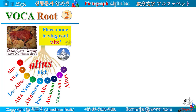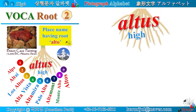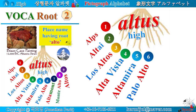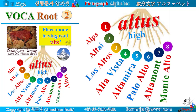Voca Root 2. There are many places in the world containing the Latin root altus, which means high: Alps, Altai, Los Altos, Alta Vista, Altamira, Palo Alto, Altamont, Monte Alto, Altos. From now on, let's study a group of words and place names having the Latin root altus.